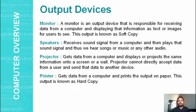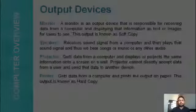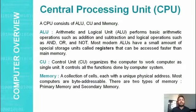Projector gets data from the computer and displays it on a very big screen or wall. Next is the printer — it gets data from the computer and prints it on paper. That's why its output is known as hard copy.